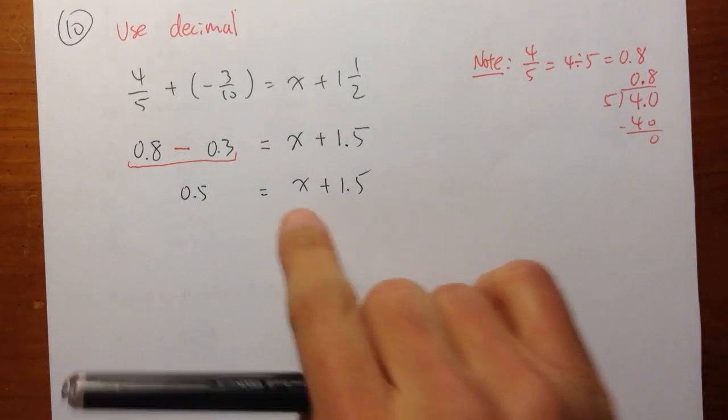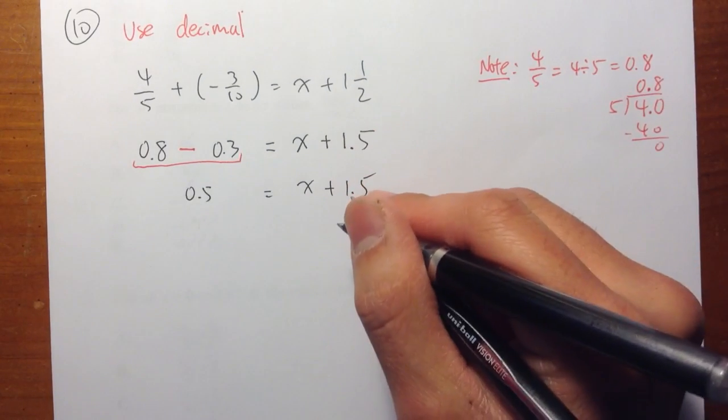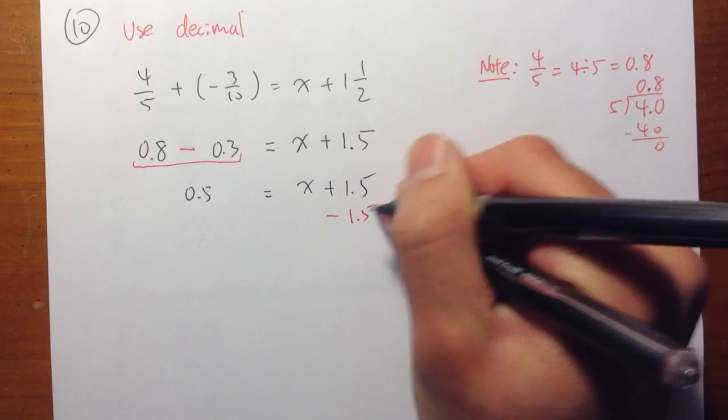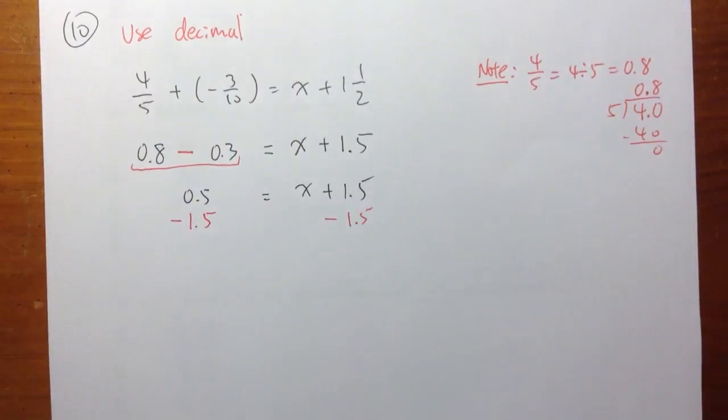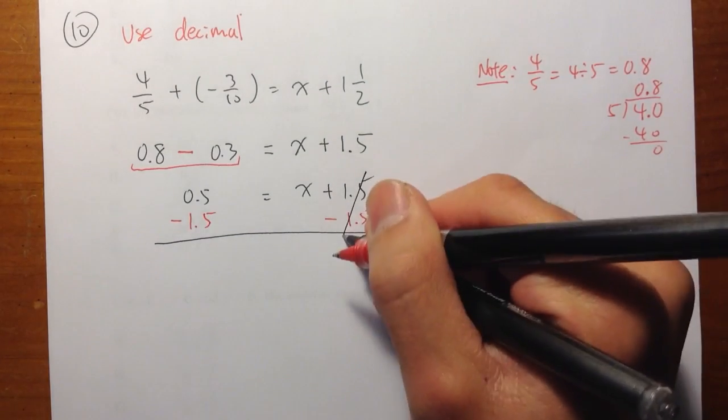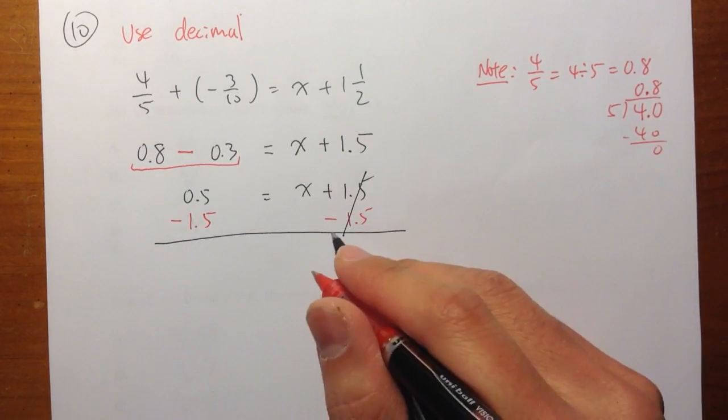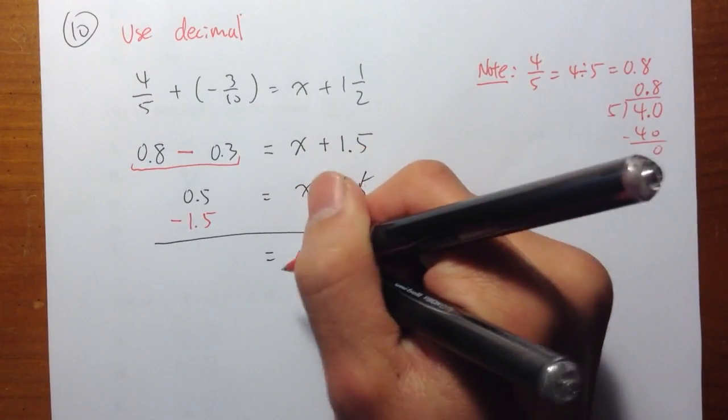Our goal is to get x by itself. So I need to subtract. Because I had a positive 1.5, I'm going to subtract 1.5 right here and also on the left-hand side. Subtract 1.5 on both sides. Cancels, right? Positive 1.5 minus 1.5 becomes 0.